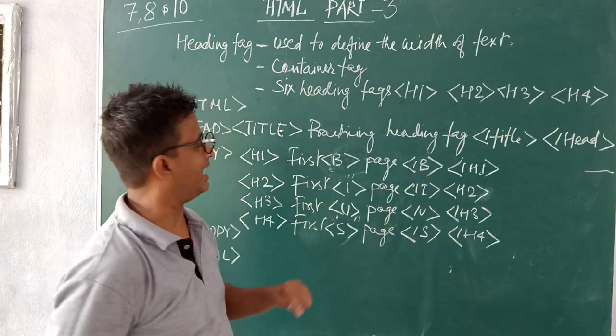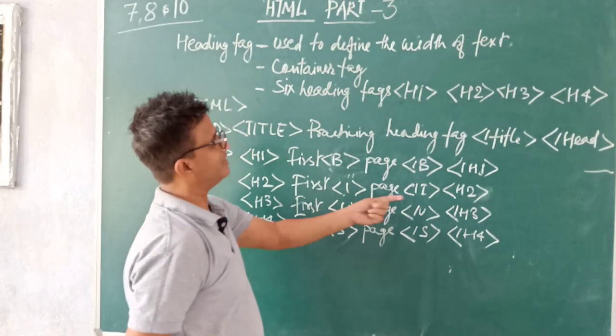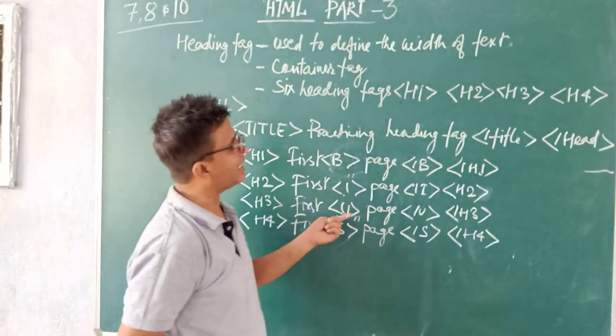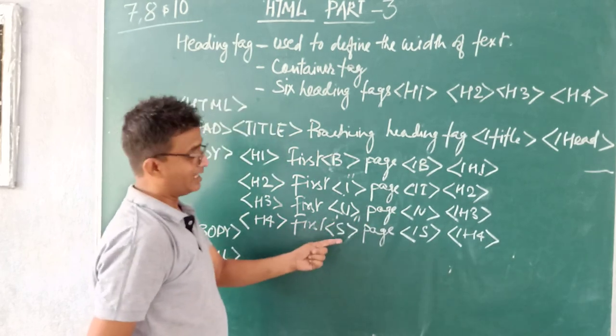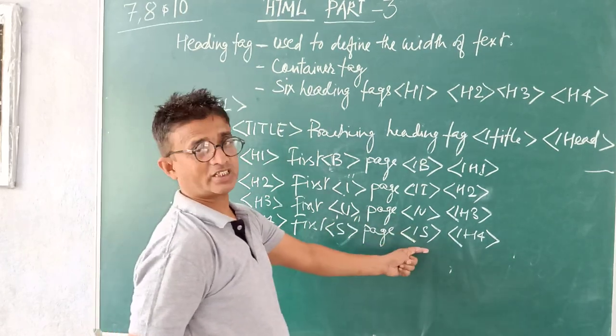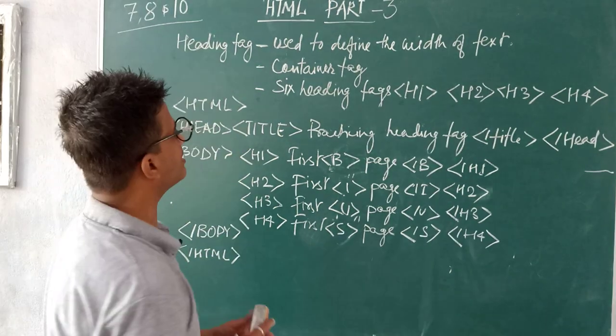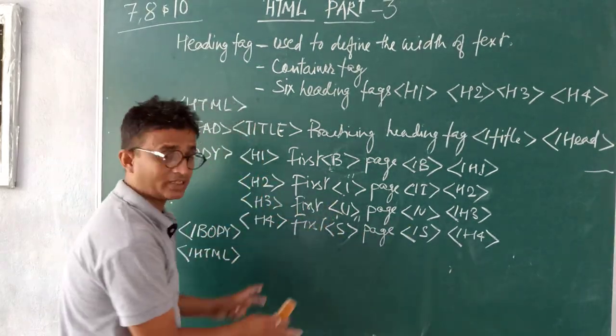Because why we closed? Because bolding is also a container tag. In the same thing I have used and closed it. In the same way I have used the underline tag and closed it after the text. In the strike I closed in the same way. Now how the display will appear? Let me show you.